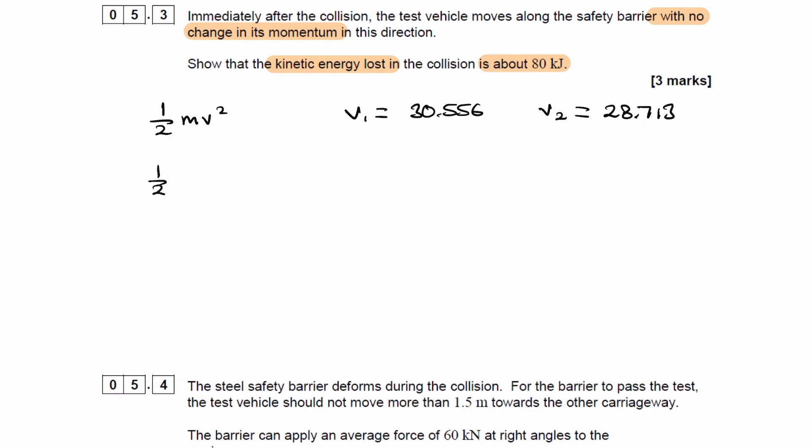So then we can do a half mv1 squared minus a half mv2 squared. To make things easier to calculate, we can factorise out the half m. This gives us a half multiplied by 1.5 times 10 to the 3 multiplied by v1 squared, 30.556 squared, minus v2 squared, 28.713 squared. And that gives me 82 kilojoules, which is about 80.